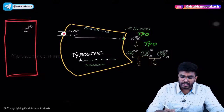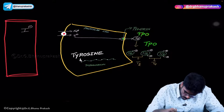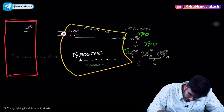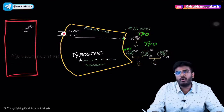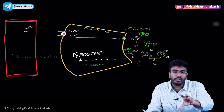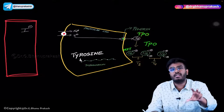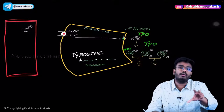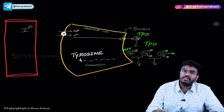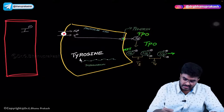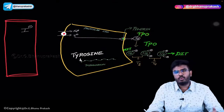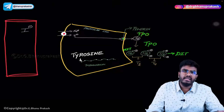A thyroglobulin molecule with one iodine is called monoiodothyronine, MIT. Monoiodothyronine means one iodine molecule is present on the thyroglobulin. A thyroglobulin molecule with two iodines is called diiodothyronine, DIT. So monoiodothyronine and diiodothyronine are both present.